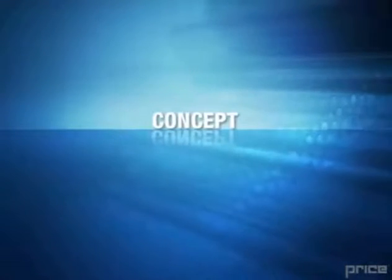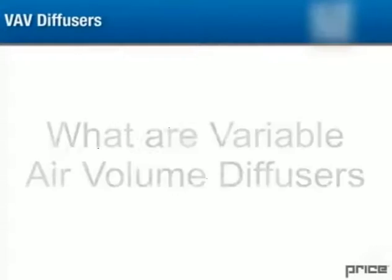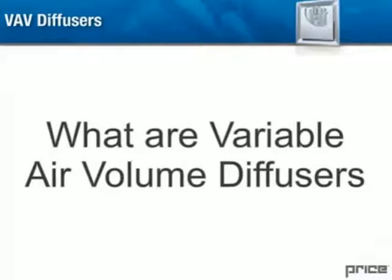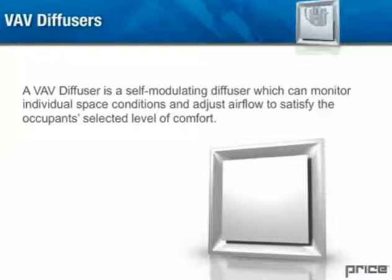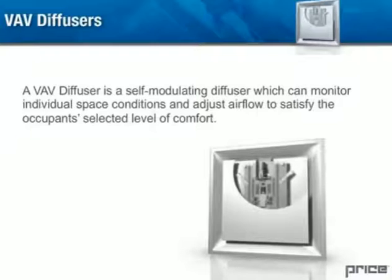Concept: What are variable air volume diffusers? A VAV diffuser is a self-modulating diffuser which can monitor individual space conditions and adjust airflow to satisfy the occupant's selected level of comfort.